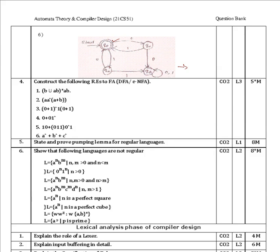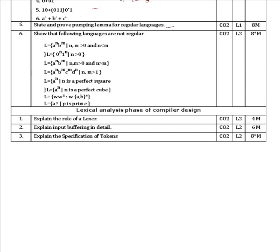Next, construct finite automata for the following regular expressions by constructing the DFA or epsilon-NFA — worth 4 to 5 marks. You have to draw the automata diagrams for the given regular expressions. Standard DFAs will be involved, so you must draw the diagrams for all of them.